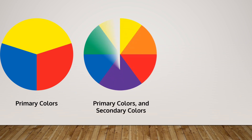Secondary colors are made from mixing primary colors and there are also three of them. For example, mix yellow and red and what do you make? Orange. How about if we mix yellow and blue, what do we get? If you said green you are correct, and if you mix red and blue you get purple. So the secondary colors are green, orange and purple.